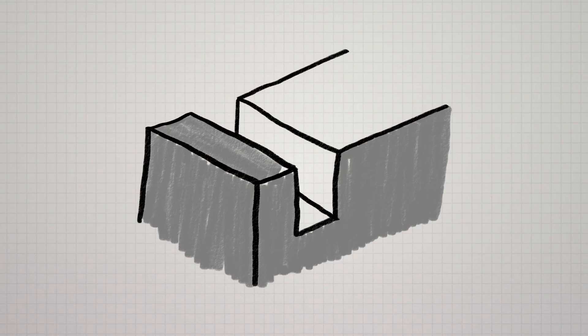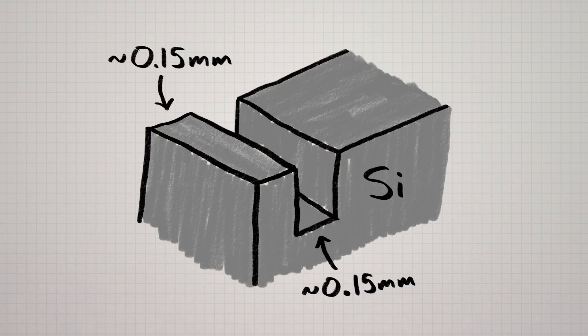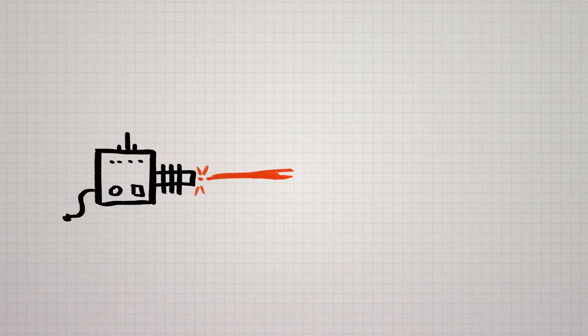In the case of silicon wafers, the gap is roughly the same width as the wafers themselves, which means about half of the original material goes to waste. This is where particle accelerators come in,